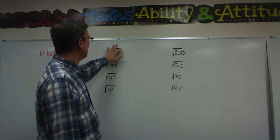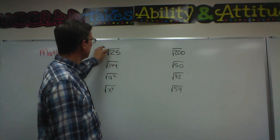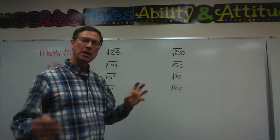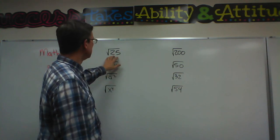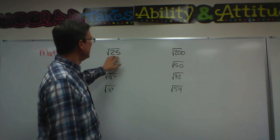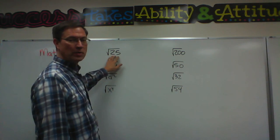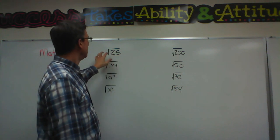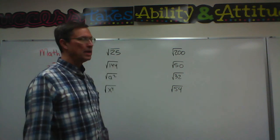This symbol that looks like a check mark and a division sign pieced together means the square root, or what number times itself equals 25. We call this symbol a radical.